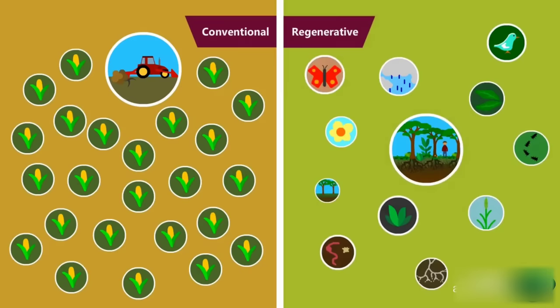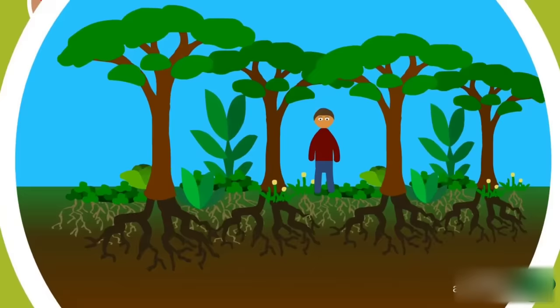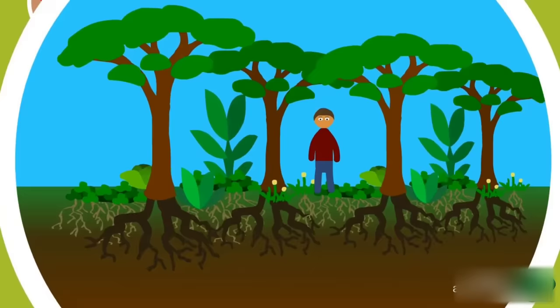These three examples of regenerative agriculture, plus all the rest of them, all have something in common. Whereas in conventional agriculture you seek to create as many of one thing as possible, in regenerative agriculture you seek to create as many relationships between things as possible. You are one of those things. What sort of relationship with the land do you want to foster?